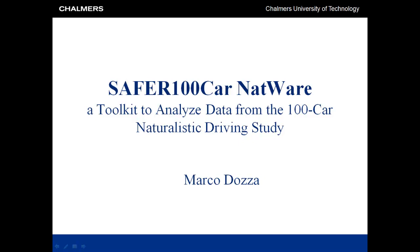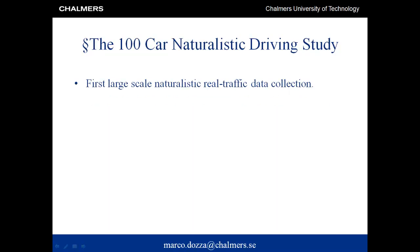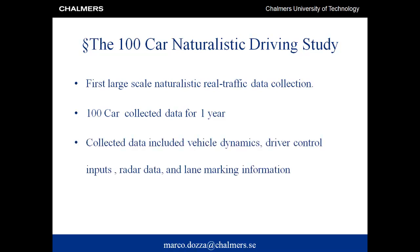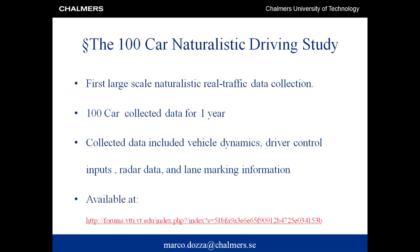The 100 Car Naturalistic Driving Study was the first large-scale naturalistic real traffic data collection. Data from 100 cars was collected in the US for a period of one year. This data comprises vehicle dynamics, driver control inputs such as steering wheel or pedals, radar data and lane marking information. Part of this data is now available online.